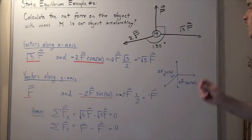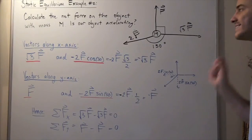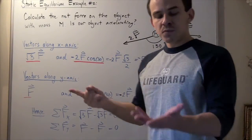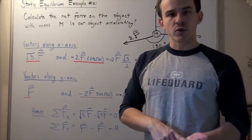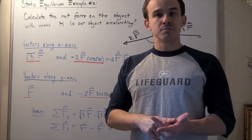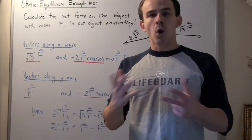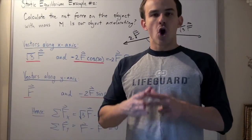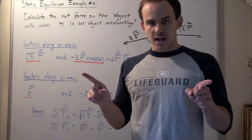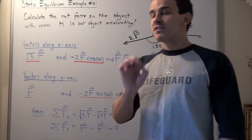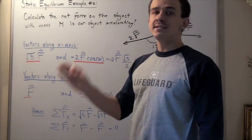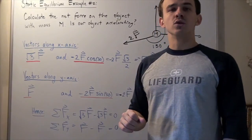Since the net force along the x-direction is zero and the net force along the y-direction is zero, our object is not accelerating. That also means it is stationary. Therefore, our object is in fact in static equilibrium.